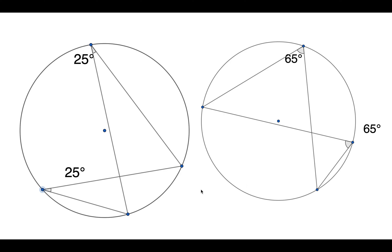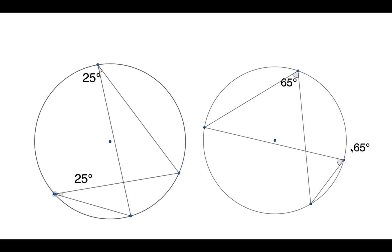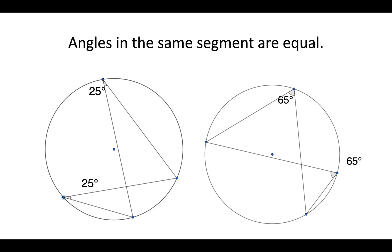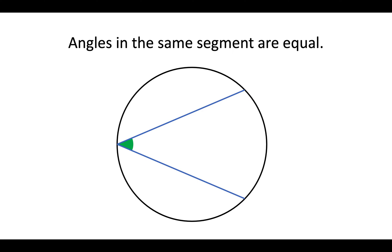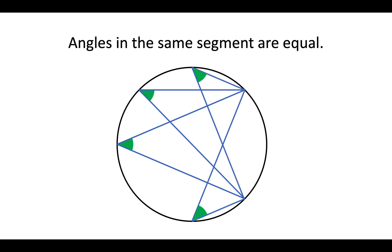Now we've got this one here. You'll see that these two angles are the same and these two angles are the same — the angles in the same segment are equal. That just means if you've got two points and you connect them to a point on the outside of a circle, they will always fall on the same angle. So these two points, if you connect them to the outside of a circle, will always find the same angle. All these green angles are the same because they all come off the same two points.